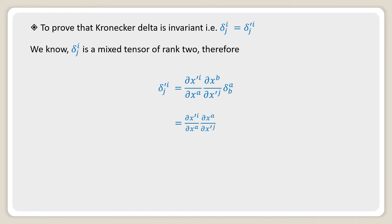Now del x'^i divided by del x^a into del x^a divided by del x'^j into delta a^a. Here we are substituting the value of b as a to get the term delta a^a. The value of delta a^a can be replaced by 1, because both the upper and lower suffix are the same, and del x^a and del x^a will get cancelled.